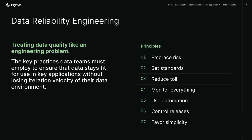Data reliability engineering applies all the same principles. The same concepts that SRE applies to software systems, data reliability engineering is intended to apply to data products and data systems. The one sentence I like to use to summarize this is: treating data quality like it's an engineering problem — taking all those hard-won lessons from software engineering and SRE, and turning them into useful practices and processes in the data space.